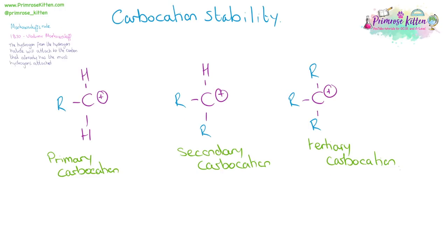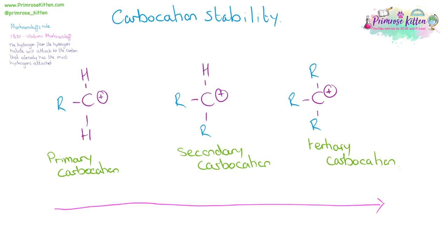A carbocation is a carbon within a molecule that has a positive charge on it. If the carbocation only has one R group — where R is the rest of the carbon chain, which could be one additional carbon long or ten carbons long — it's a primary carbocation and it's going to have two hydrogens attached to it. Secondary carbocations have two R groups and one hydrogen attached. Tertiary carbocations have three R groups attached. These carbocations differ in their stability; as we go from primary to tertiary, the stability increases.